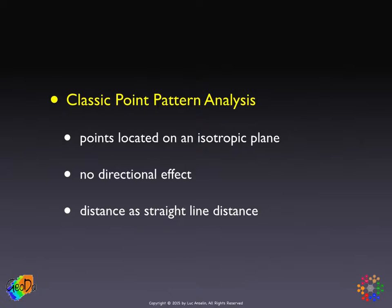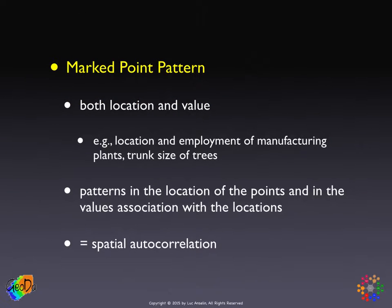The classic case involves just one type of event, where location is the only thing we are interested in. But there are variants. One variant is called a marked point pattern. The mark is the value associated with a particular event, so we have both location and the value associated with that location. In classic studies, these were in forestry — the location of a tree and its trunk size or canopy. In more recent studies in economic geography, this pertains to the location of a manufacturing plant and its employment. So we're interested not only in patterns in the location of points, but also how these patterns in location are associated with the values — exactly the concept of spatial autocorrelation.